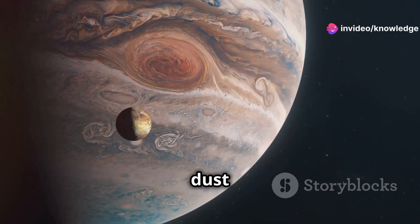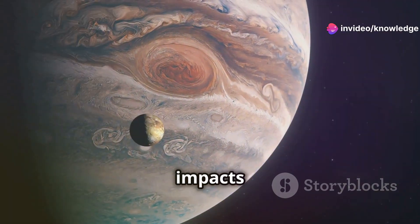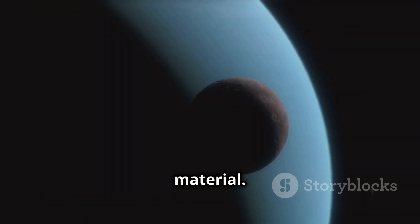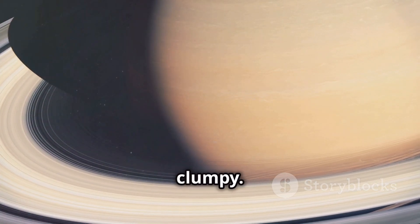Jupiter's rings are made up of dust particles, likely kicked up by impacts on its moons. Uranus's rings are composed of dark, icy material. Neptune's rings are faint and clumpy.